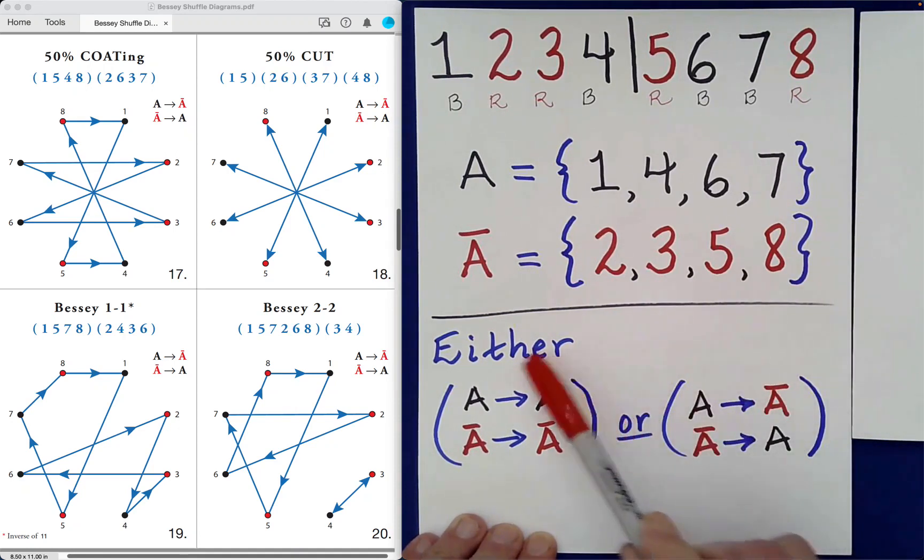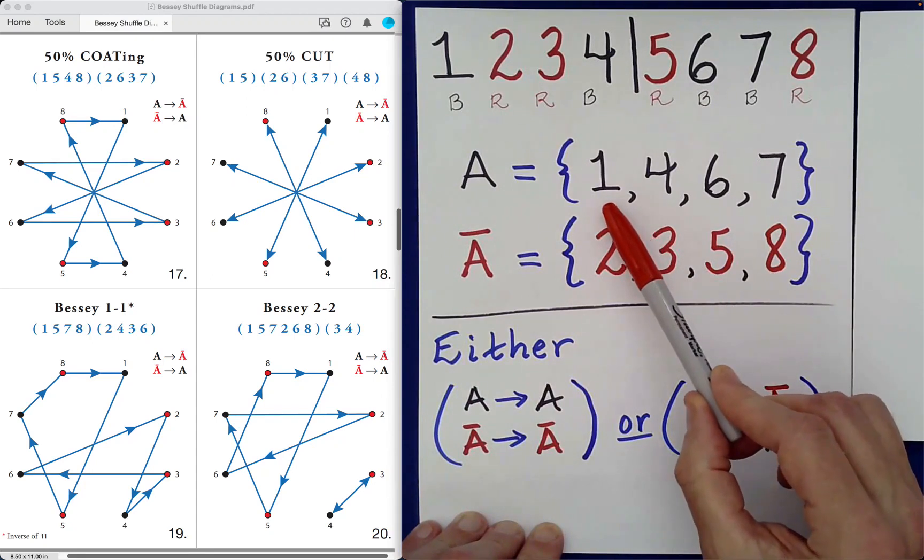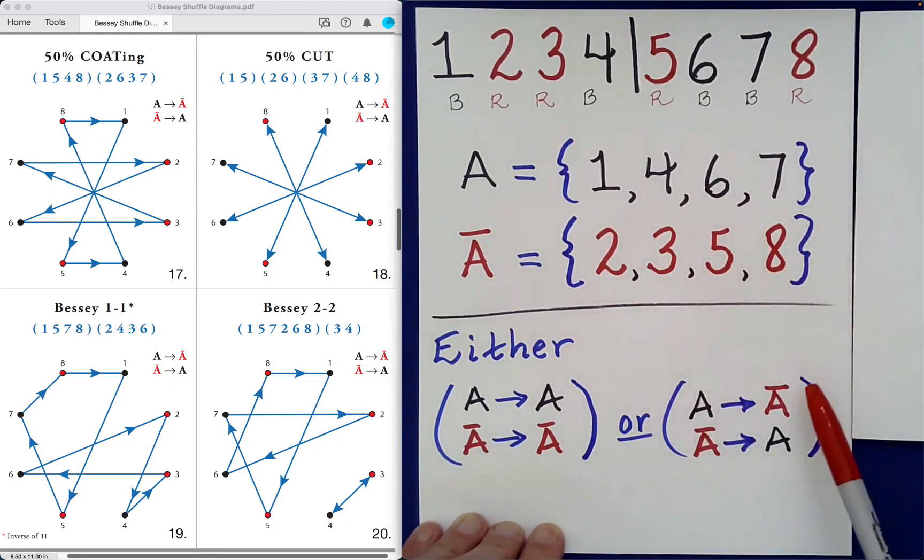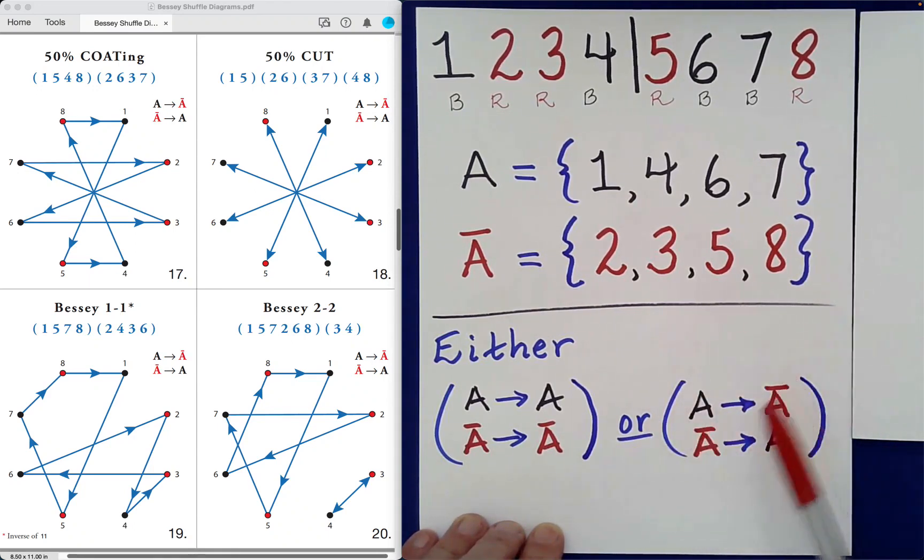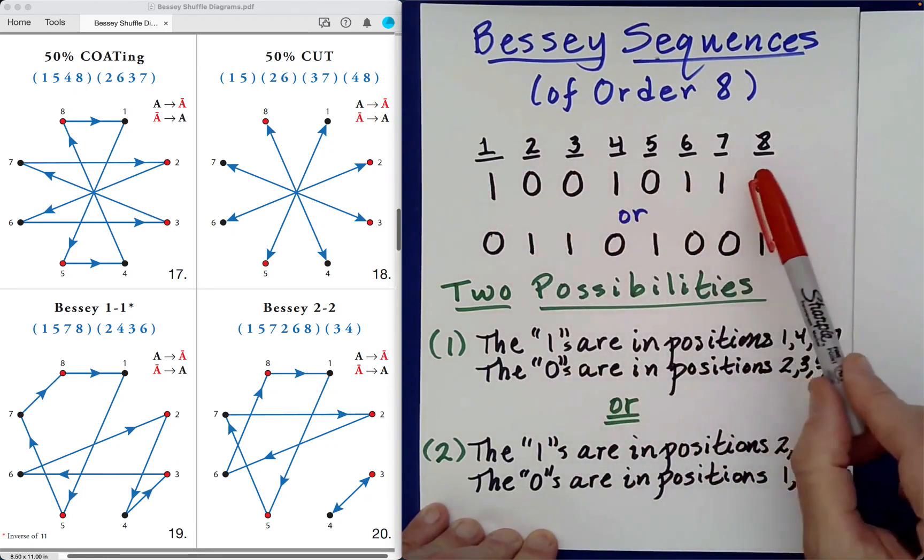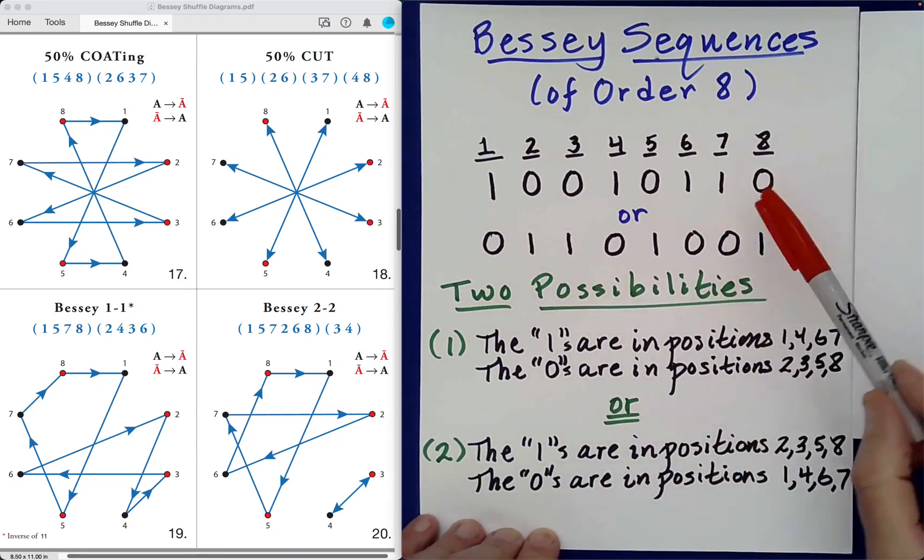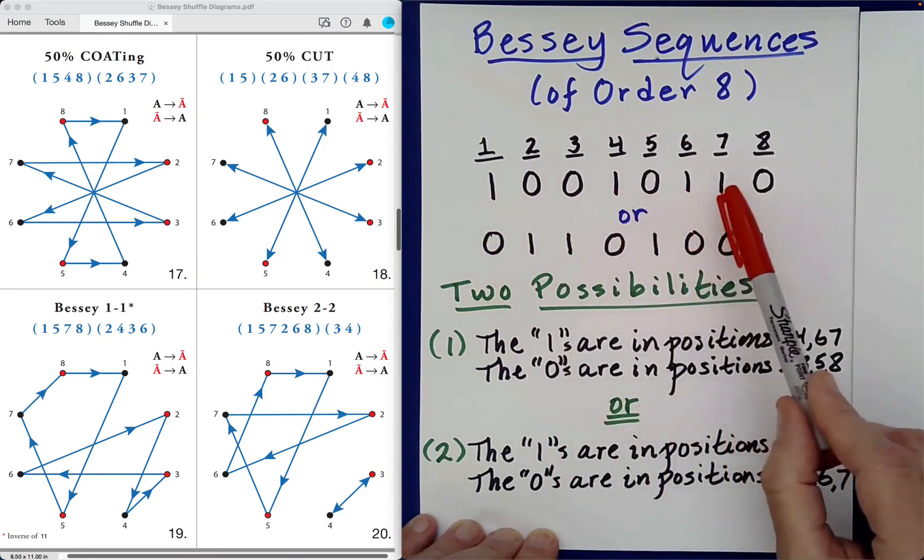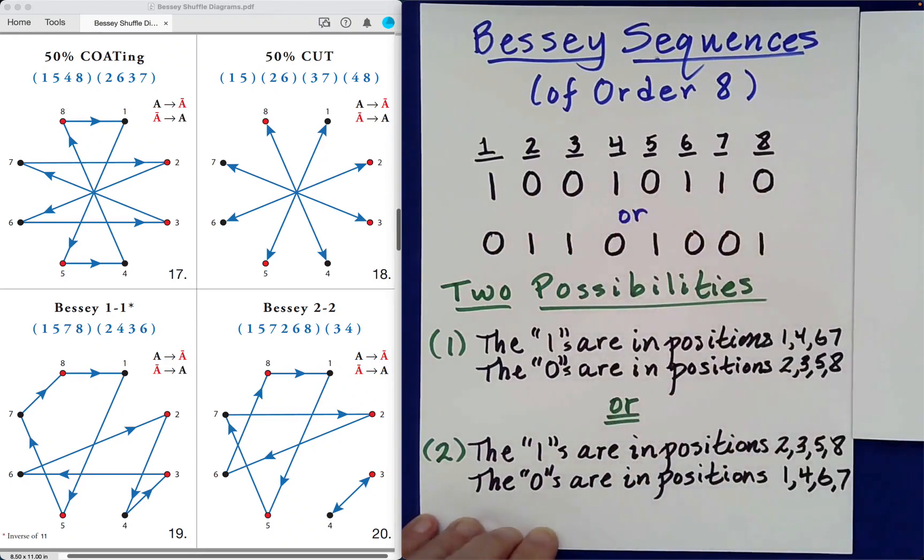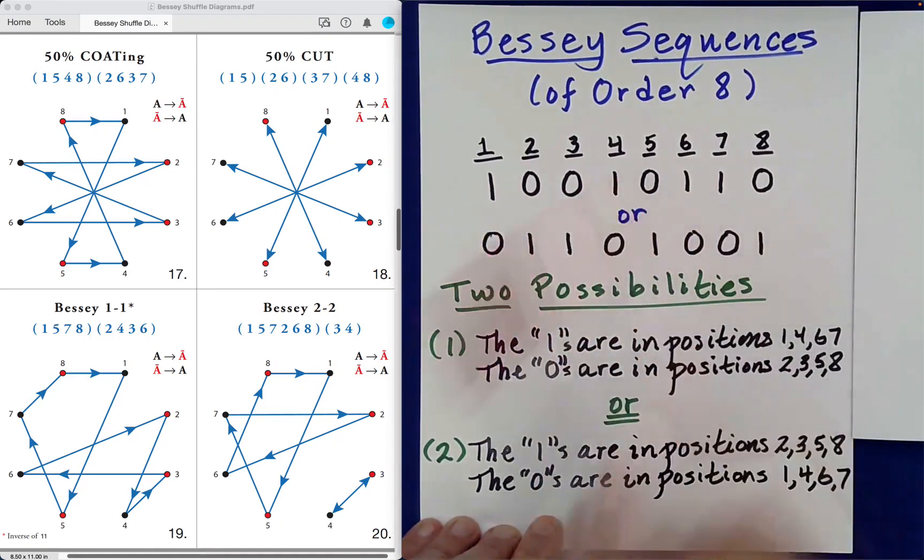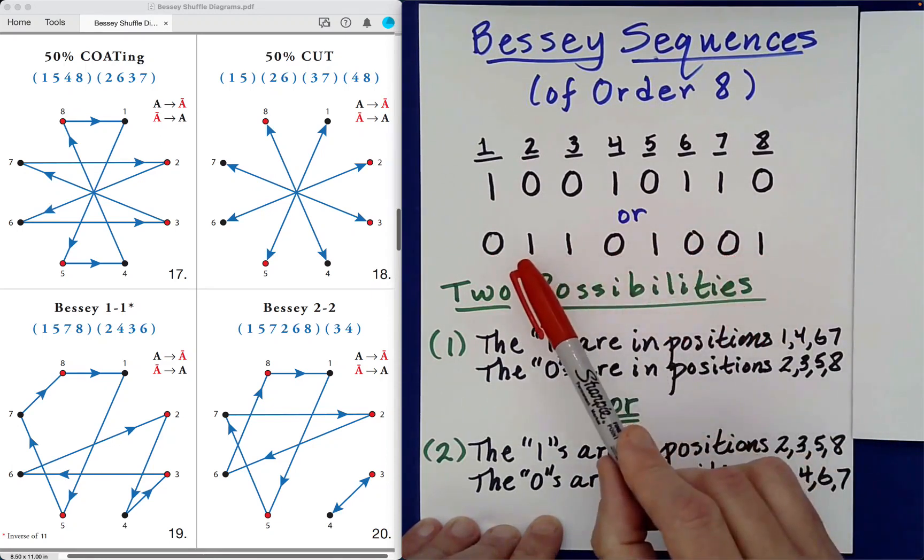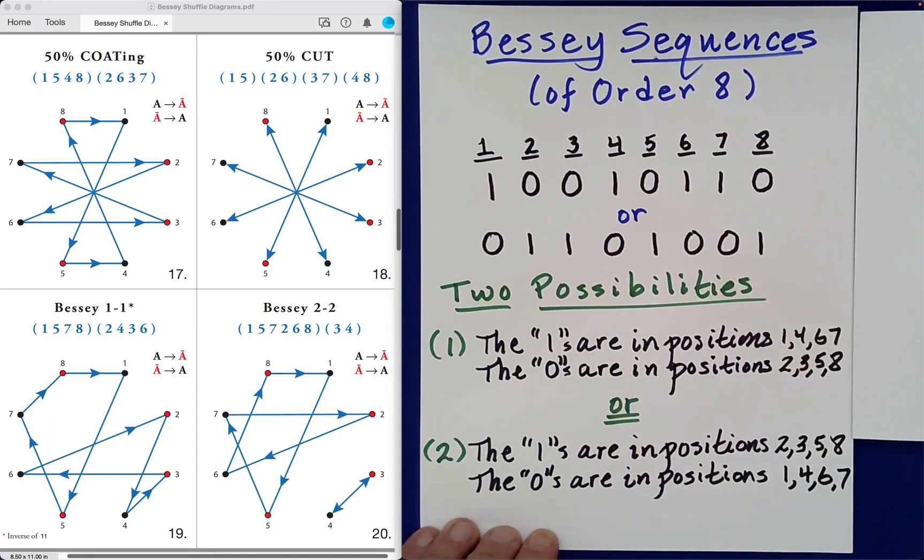That being the case, we're looking at this situation here. If it happens that the cards originally in positions 1, 4, 6, 7 get moved to positions 2, 3, 5, 8 and vice versa, then we say an inversion has occurred and we represent it in this way using the names of our sets A and A complement. Relating all of this to Bessie's sequences expressed using zeros and ones, we find that there are only two possibilities. Either our ones will be in positions 1, 4, 6, 7 with the zeros in positions 2, 3, 5, 8, or in the case of the inversion of this sequence, we get the Bessie's sequence in which the zeros are now in positions 1, 4, 6, 7 and the ones are in positions 2, 3, 5, 8.